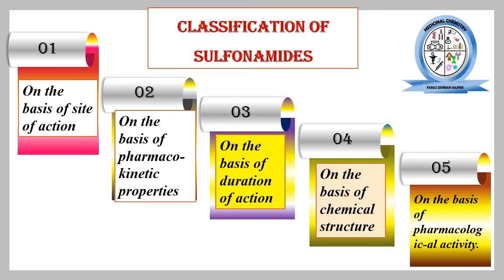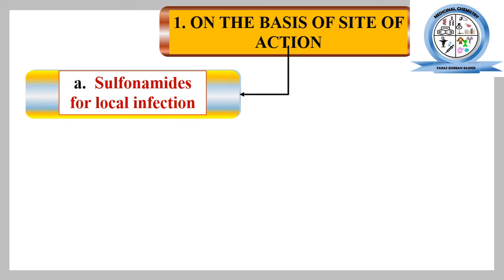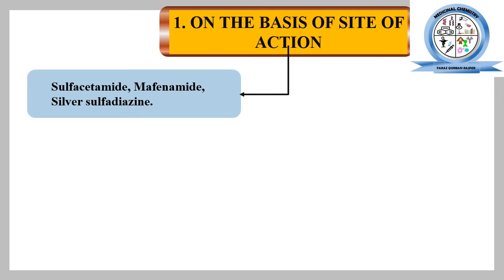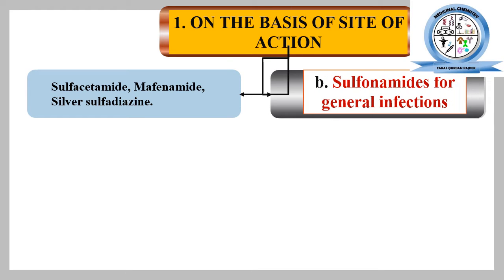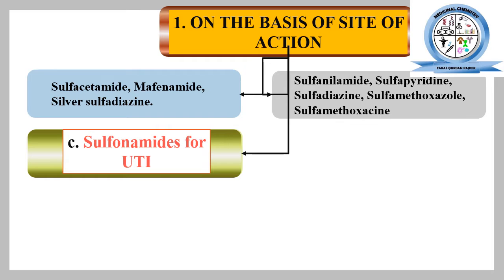The first classification is based on the site of action. On this basis, sulfonamides used only for local infection include sulfacetamide, mafenide, and silver sulfadiazine. Sulfonamides useful for general infection include sulfanilamide, sulfapyridine, sulfadiazine, sulfamethoxazole, and sulfamethoxazine.